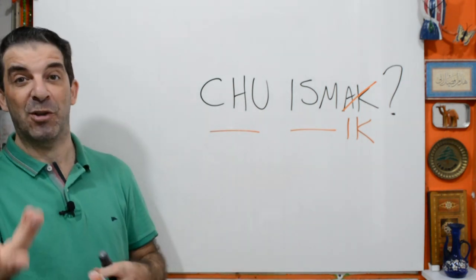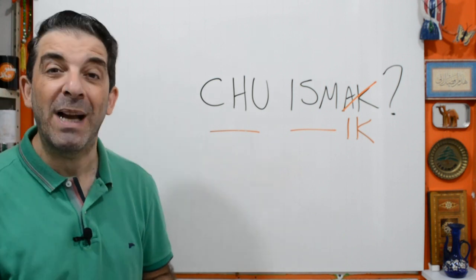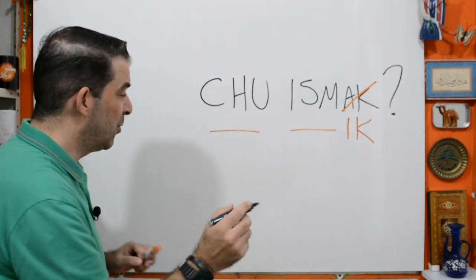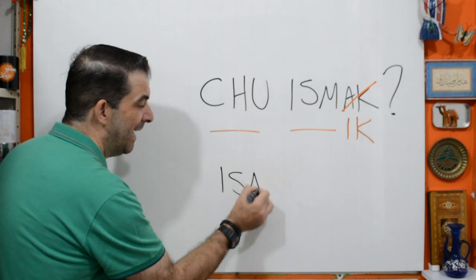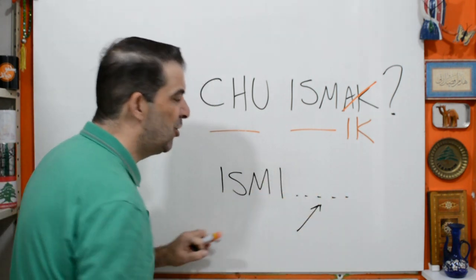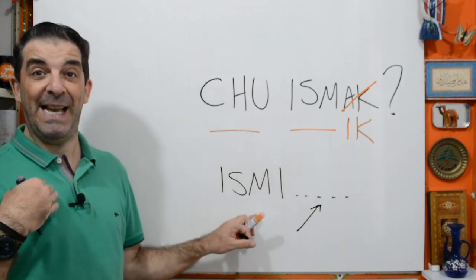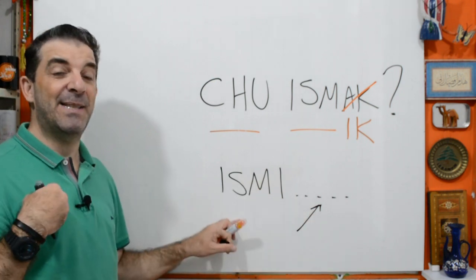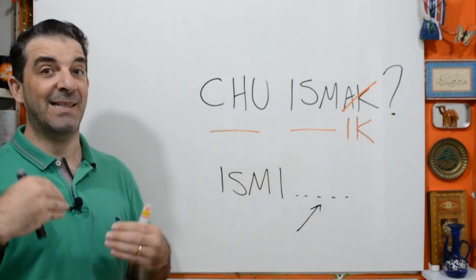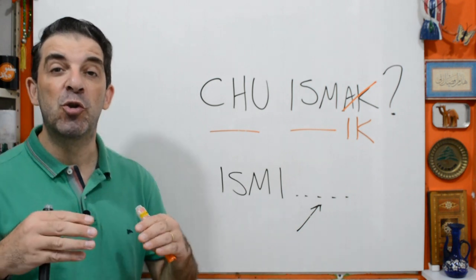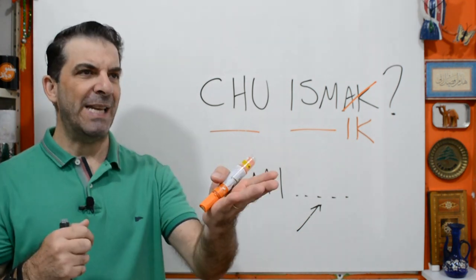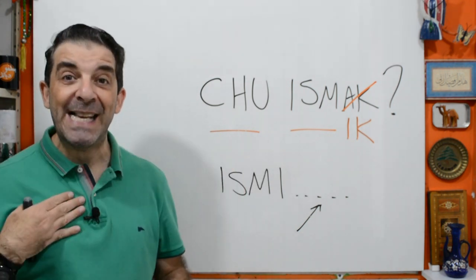And since we're talking about what's your name, why not learn to answer 'my name is.' Really simple: Ismi, and then your name. Just say Ismi David, or Ismi Maryam. Make sure to practice aloud so you get used to the language. Shuu ismak. Shuu ismik. Ismi.